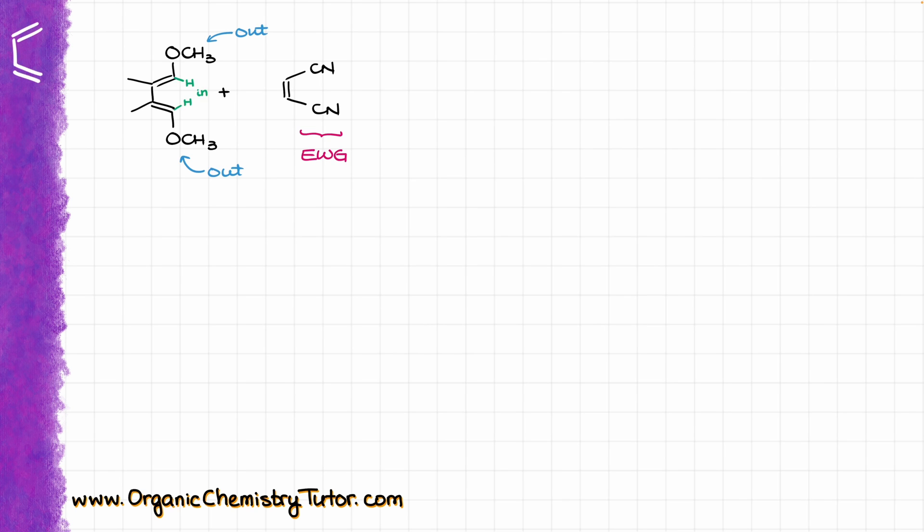As we have established, the methoxy groups are our out-groups, while the hydrogens, I'm going to show them here in green on atoms 1 and 4 correspondingly, those guys are going to be my in-groups. To predict the correct product here, I'm first going to draw the stem for the final product, which is going to be the six-membered ring of course. Then I'm going to number it and add a double bond between atoms 2 and 3 where it should be.